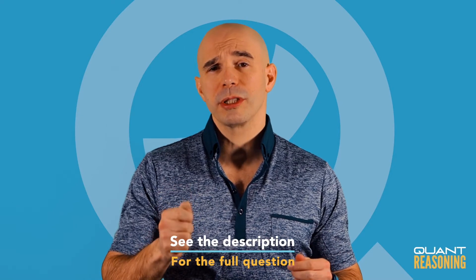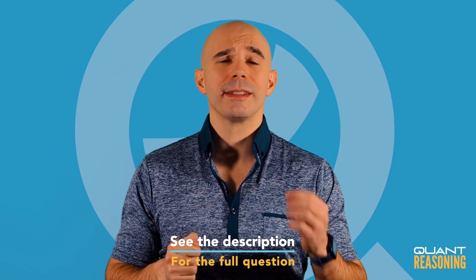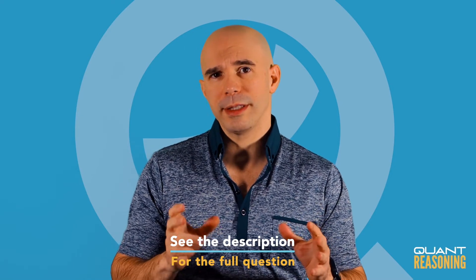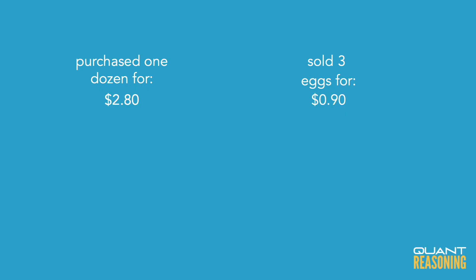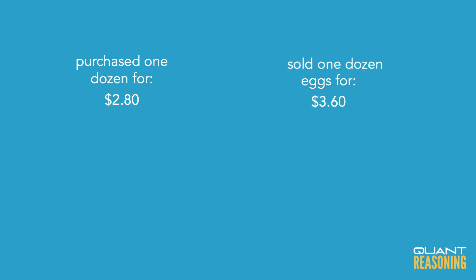This question gives us a purchase price and a sale price, but the annoying thing is that the purchase price talks about a dozen eggs and the sale price talks about just three eggs, so they're not compatible with one another. Probably the easiest thing to do is to multiply our sale price by four, so that it's the sale price of a dozen eggs — that way it matches our purchase price of a dozen eggs.